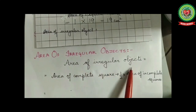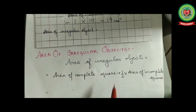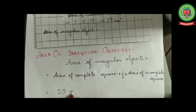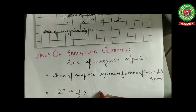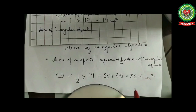The area of an irregular object is calculated as: area of complete squares plus half of the area of incomplete squares. That is 23 + (19/2) = 23 + 9.5 = 32.5 cm² approximately.